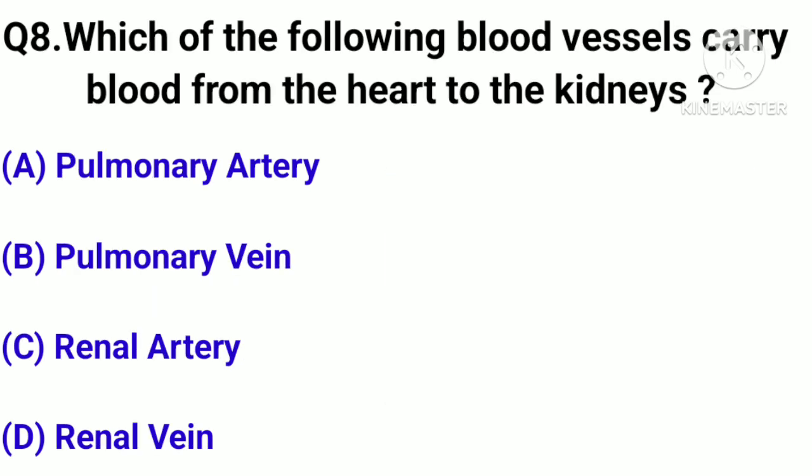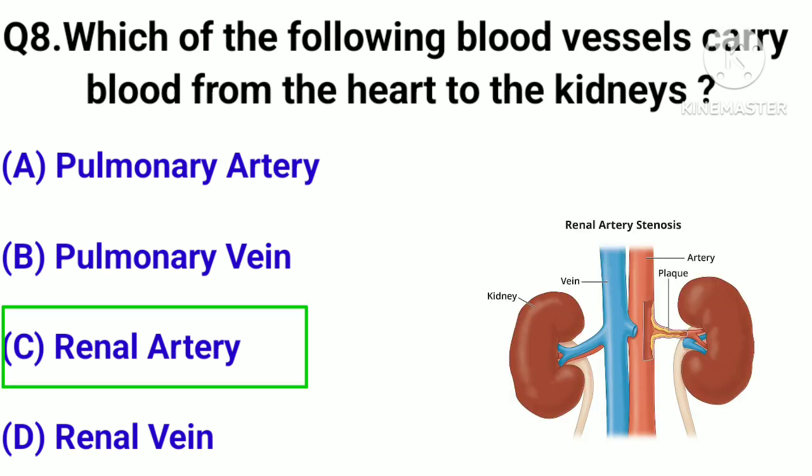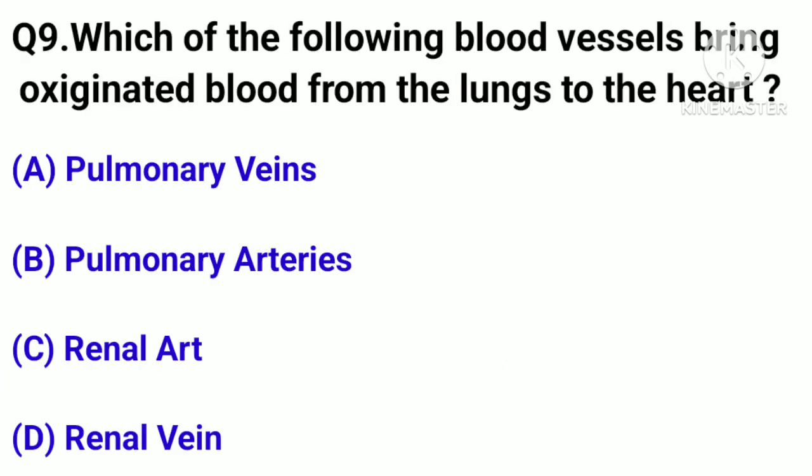Question number 8. Which of the following blood vessels carry blood from the heart to the kidneys? Option A: Pulmonary artery. Option B: Pulmonary vein. Option C: Renal artery. Option D: Renal vein. Correct answer: Option C.